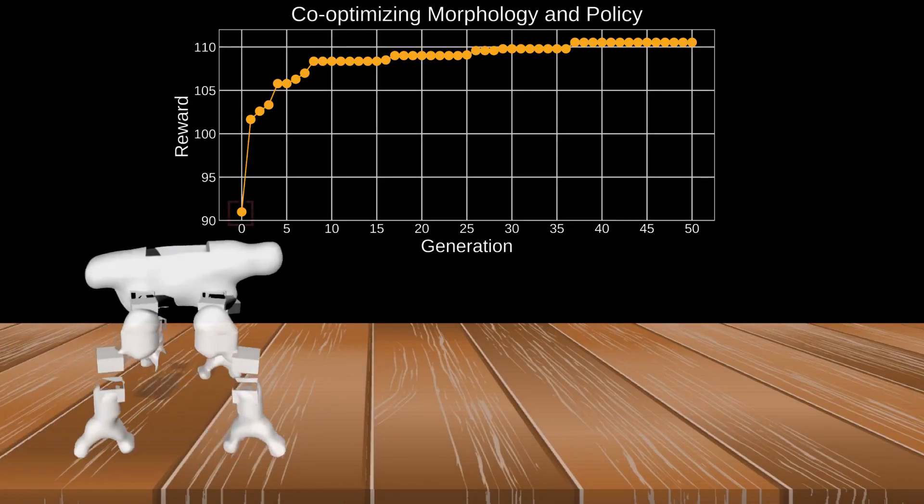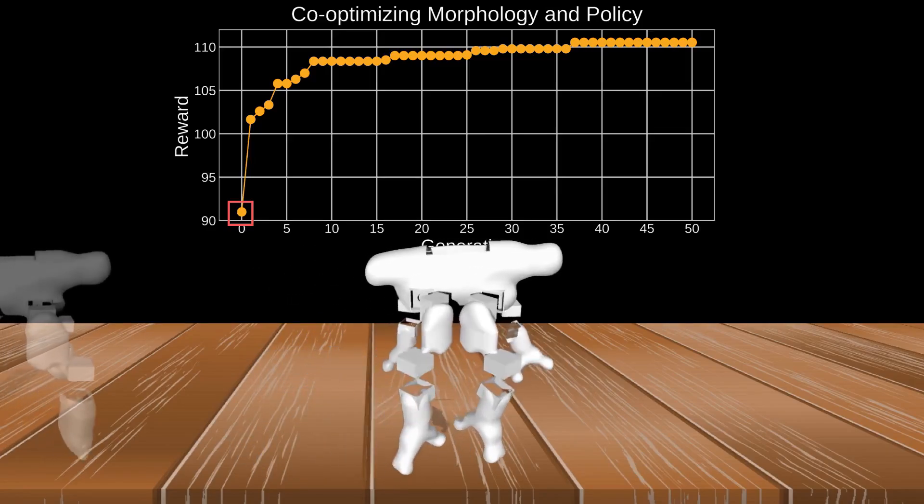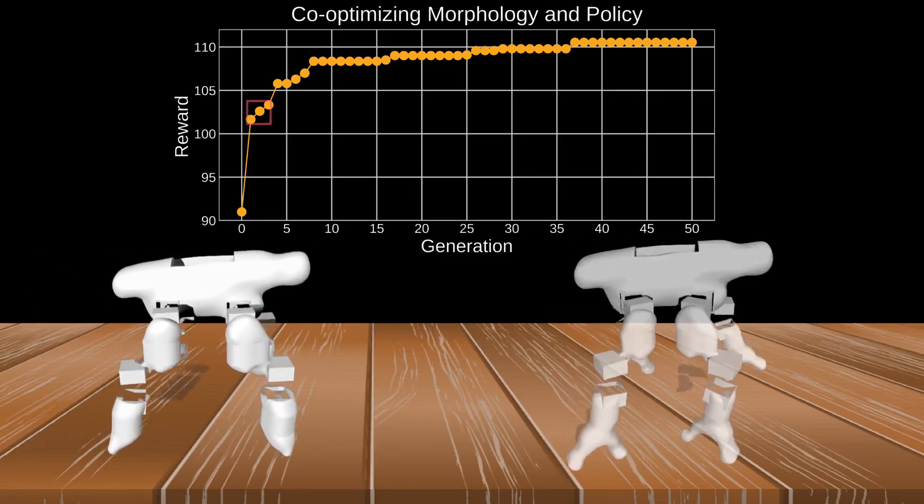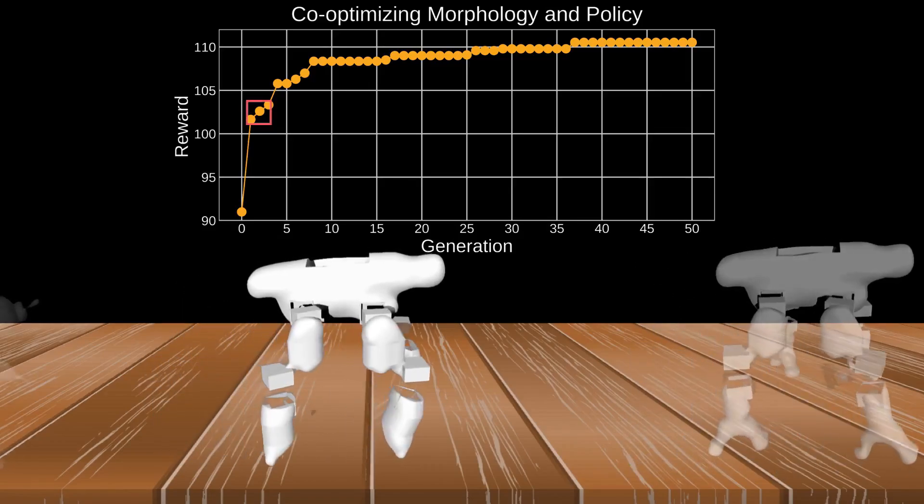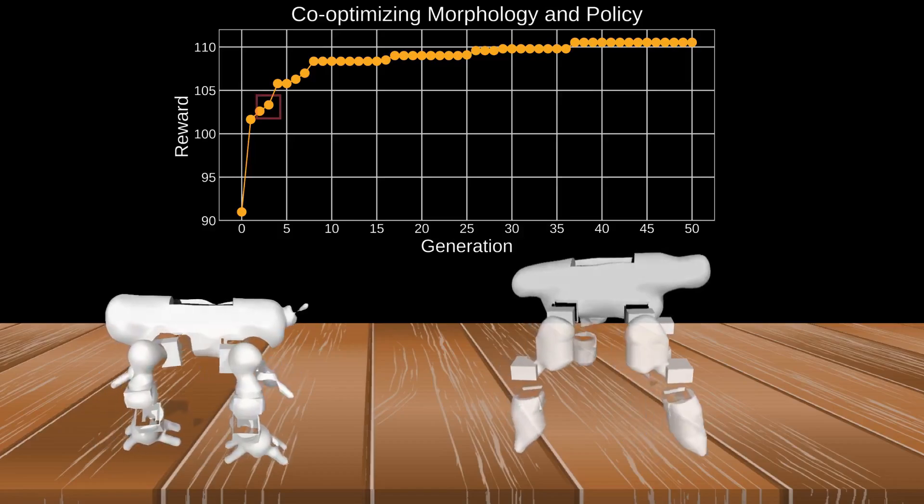A reinforcement learning inner loop is used to evaluate morphologies at each generation. We can evolve robots to prioritize user preferences, such as velocity tracking accuracy or energy efficiency.